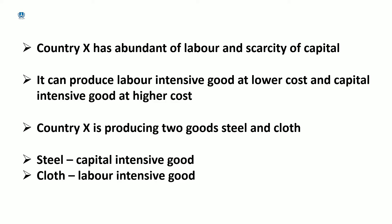Country X has abundant labor and scarcity of capital. It can produce labor-intensive goods at lower cost and capital-intensive goods at higher cost. Country X is producing two goods: steel and cloth. Steel is made using a capital-intensive technique, and cloth is made using a labor-intensive technique.